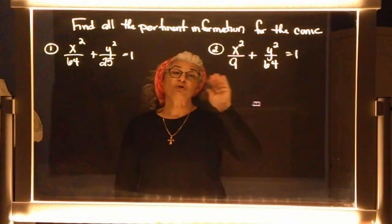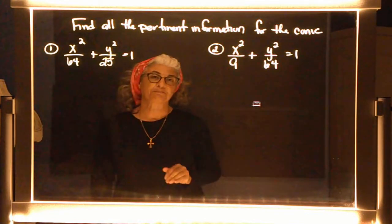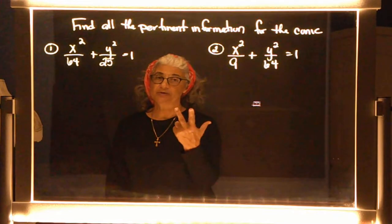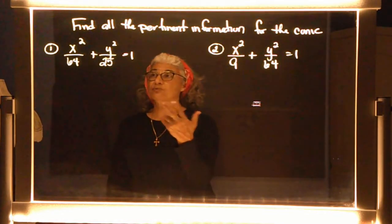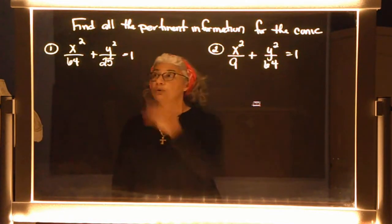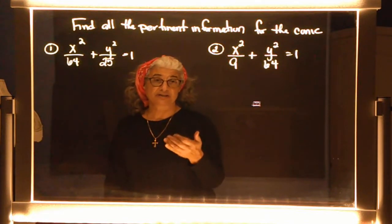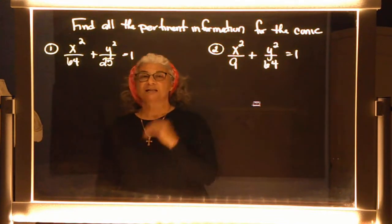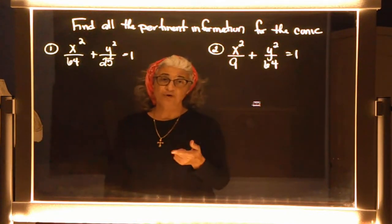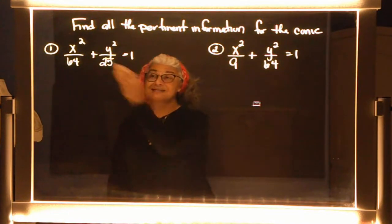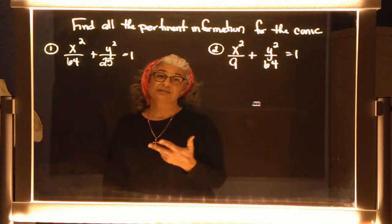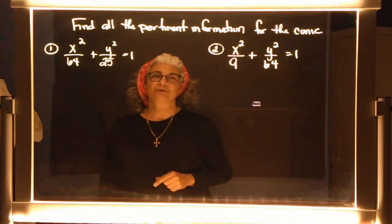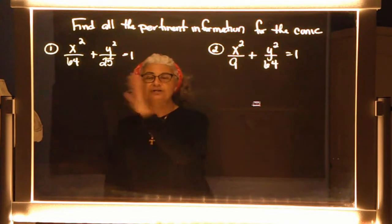Let's find the pertinent information for example one. When they say 'conic,' which of the three — circle, parabola, or ellipse — does this equation represent? It has x² and y², so it could be a circle, but a circle doesn't have denominators. A parabola doesn't have both x² and y². This equation has x² and y², denominators, and equals one — so all three requirements for an ellipse are met.